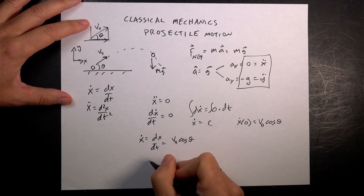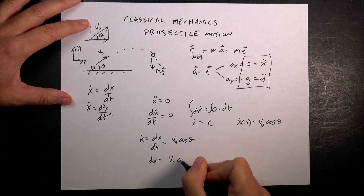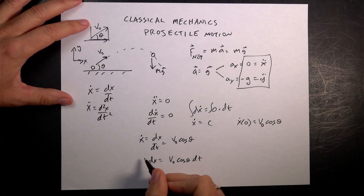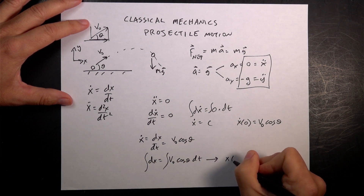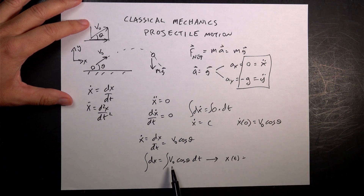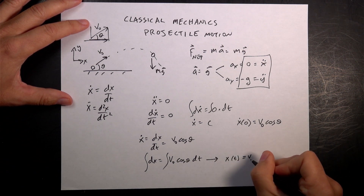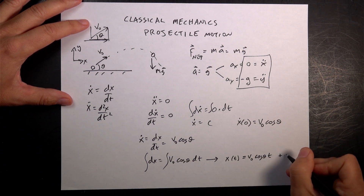I can multiply both sides by dt, and I get dx equals v zero cosine theta dt. Now I can integrate both sides, and this gives me x as a function of time. This is just a constant — v zero cosine theta — with a dt, so if I integrate a constant times dt, I get v zero cosine theta times t, plus some constant c.